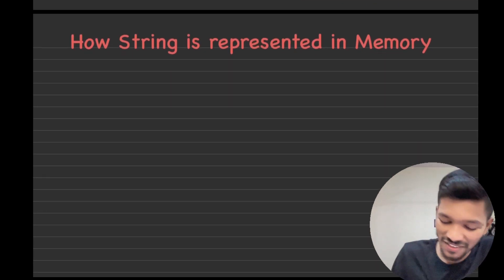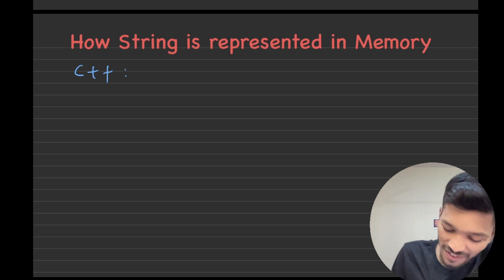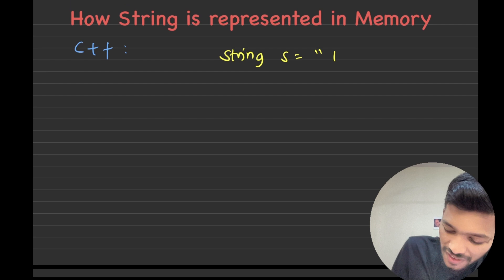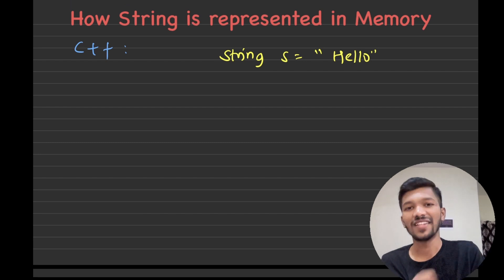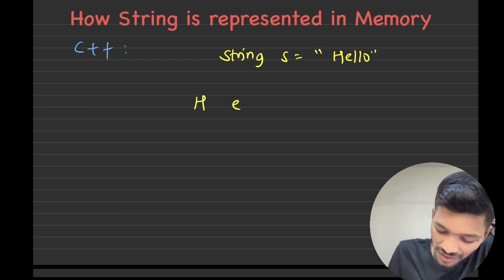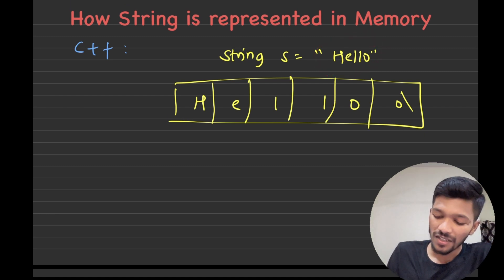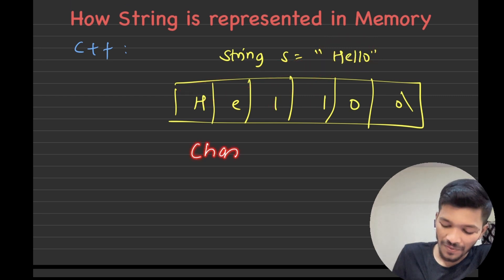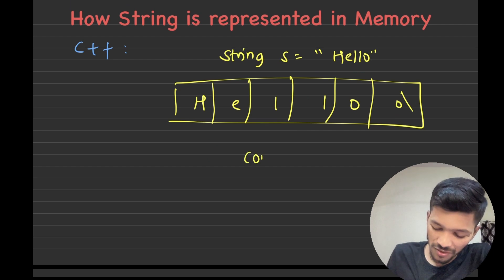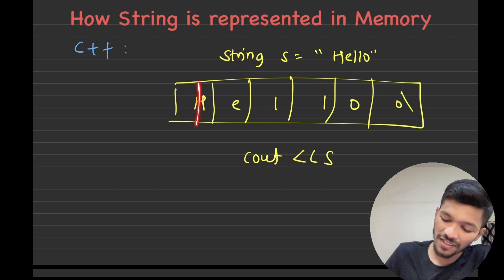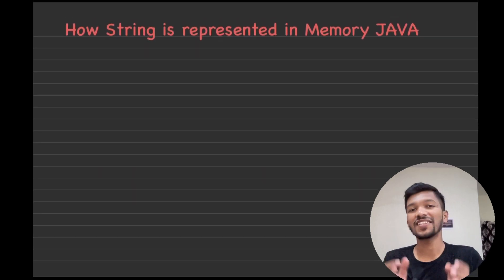Now let's understand how strings are represented in memory. First I'll discuss C++, then we'll shift to Java. Whenever we declare a string in C++, like String s = "hello", internally the compiler converts it into a character array, but as we discussed, it must end with a null pointer. So when converted to a character array, it looks like H, E, L, L, O, and finally a null pointer. This is how strings in C++ are stored in memory — each character gets a separate block and it always ends with the null pointer. When you print in C++ using cout, the compiler runs from the first character till the last and stops the moment it encounters the null pointer.